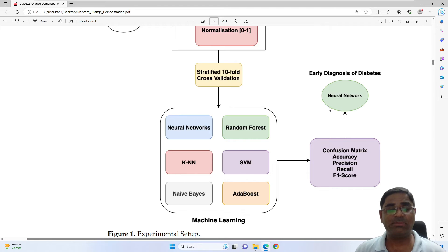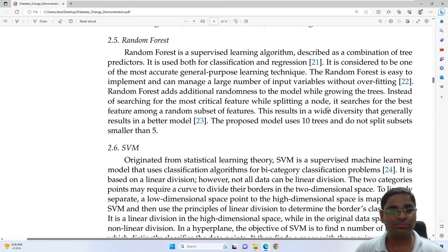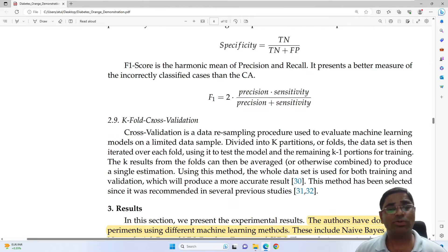So as can be seen in the experimental setup, the next step is a stratified 10-fold cross validation. So what is K-fold cross validation? It is a data resampling procedure used to evaluate machine learning models on a limited data sample. The dataset is divided into K partitions or folds and then iterated over each fold, using it to test the model and the remaining K-1 portions for training. The K results from the folds can then be averaged or otherwise combined to produce a single estimation. Using this method, the whole dataset is used for both training and validation, which will produce a more accurate result.